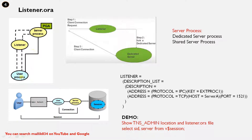In a brief connection explanation: the user process passes the connection to the listener, and from the listener the connection goes to the PGA — the Program Global Area. Inside the PGA you can see a server process, which may be either a dedicated server process or a shared server process.